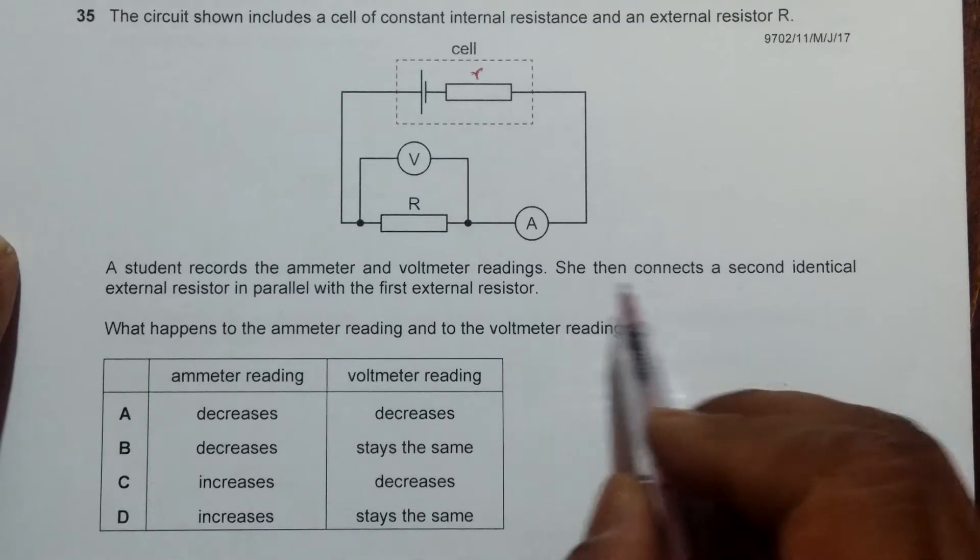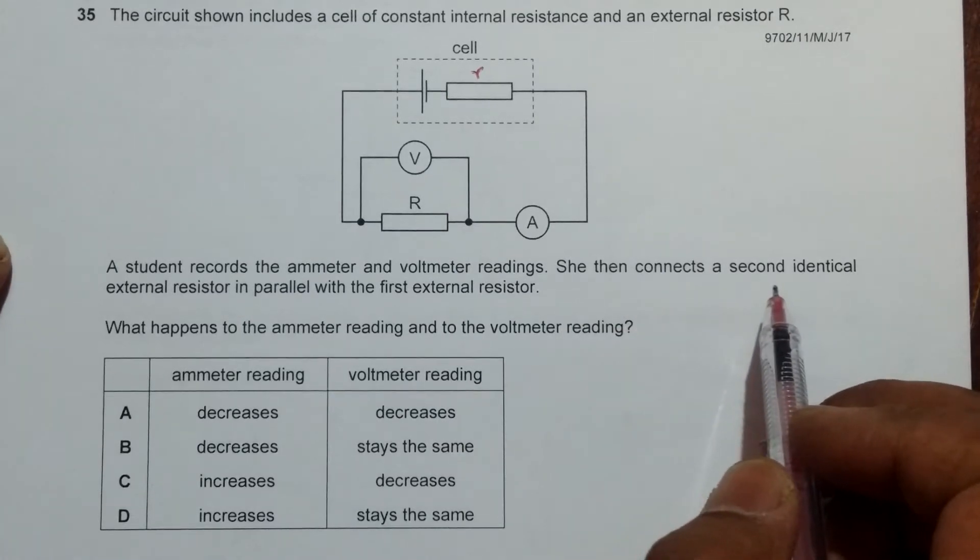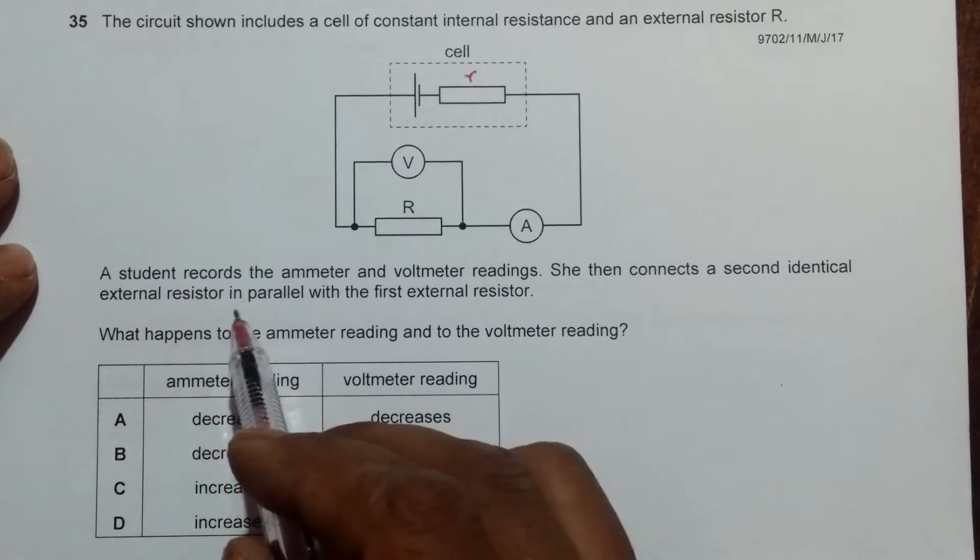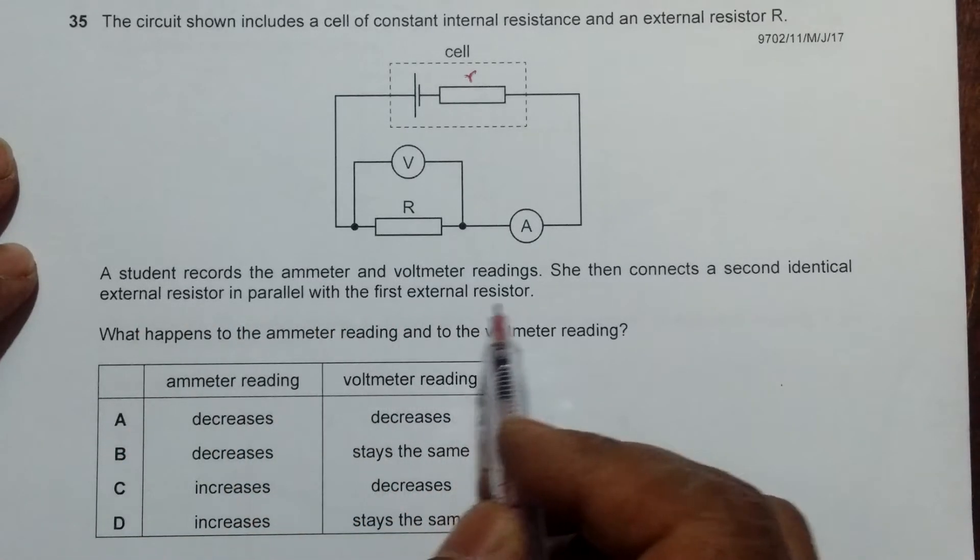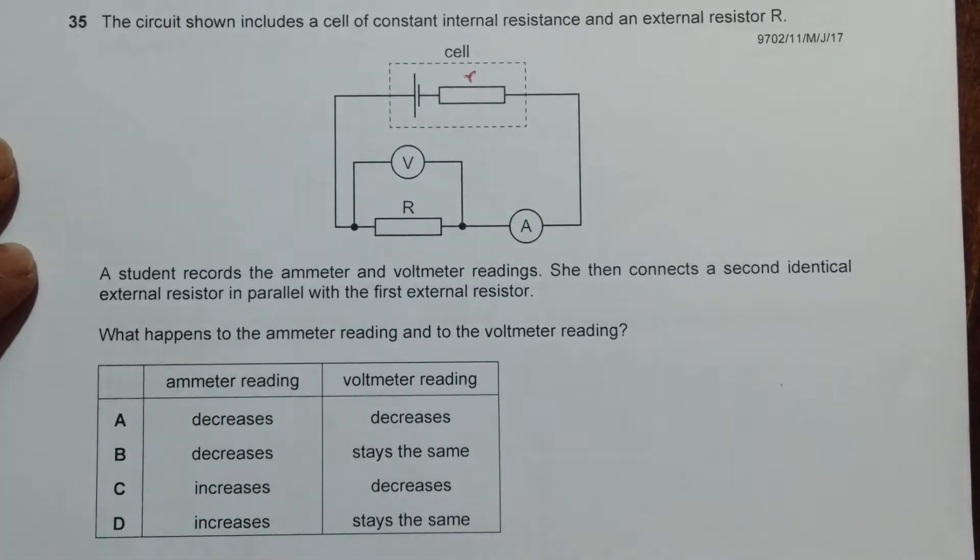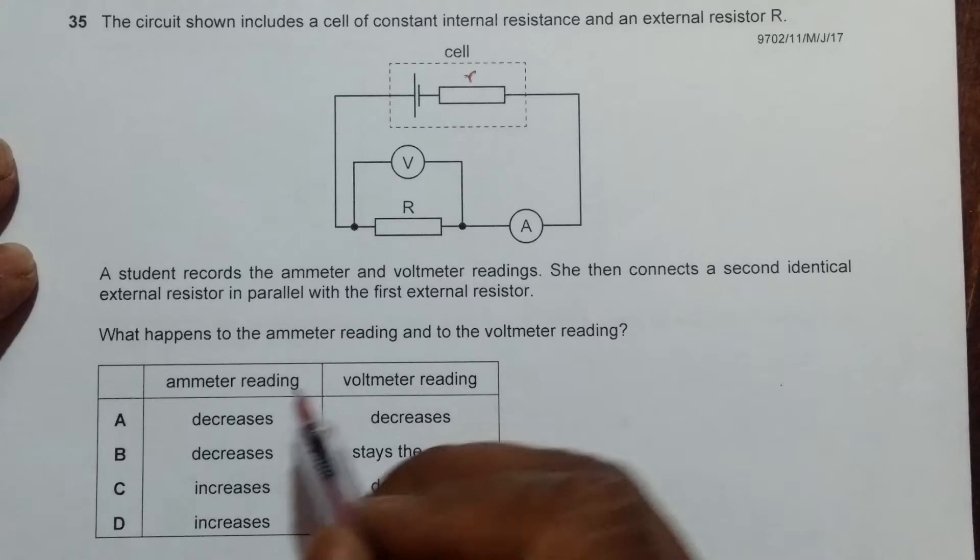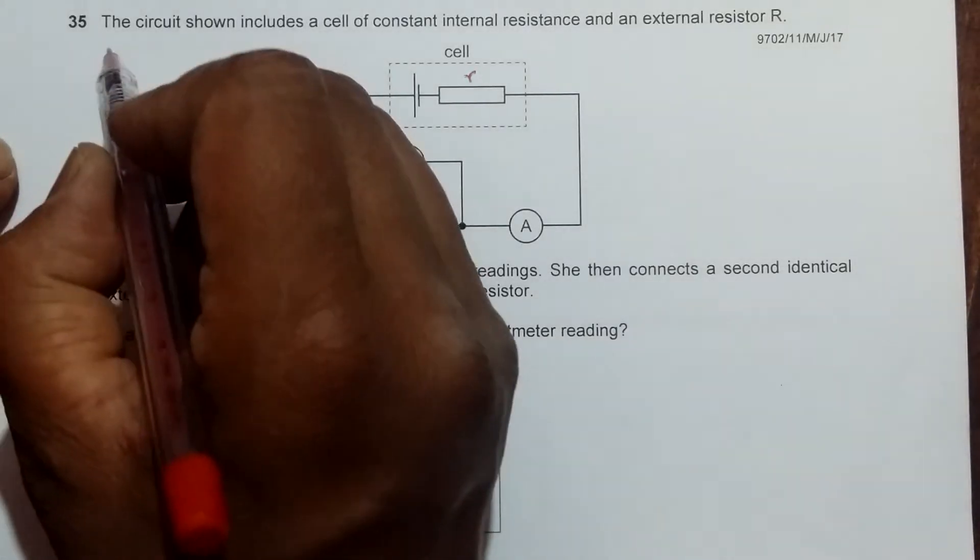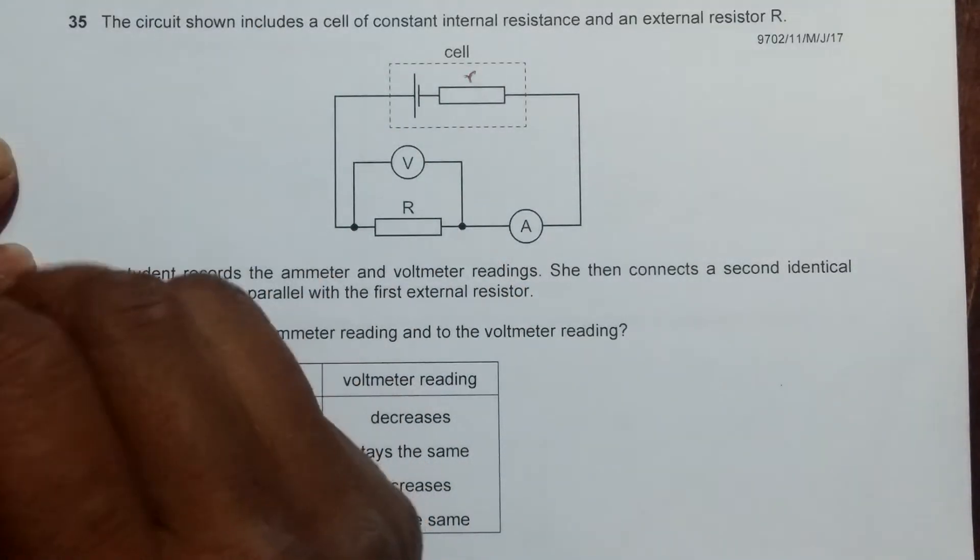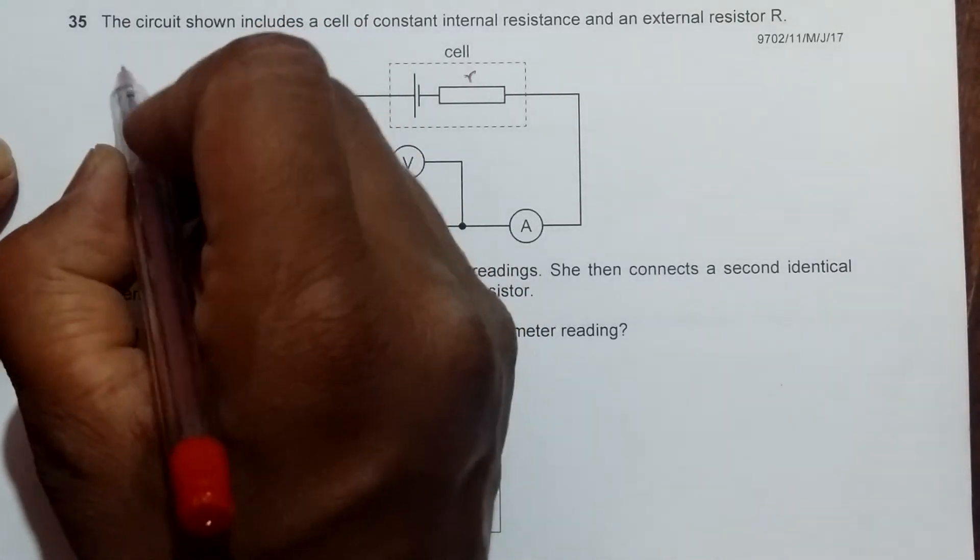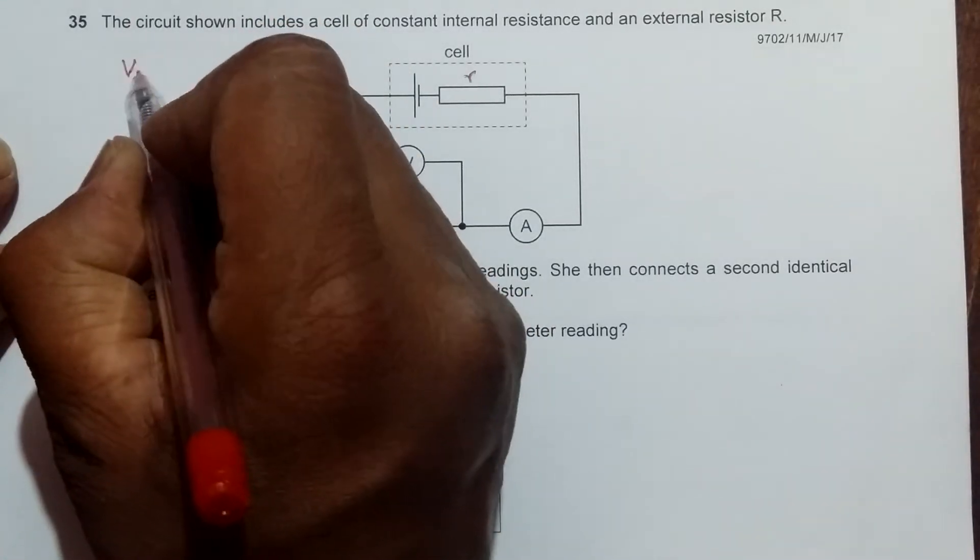She then connects a second identical external resistor in parallel with the first resistor. So here, let us first remember that when there are no other resistances, we will have the terminal potential difference.